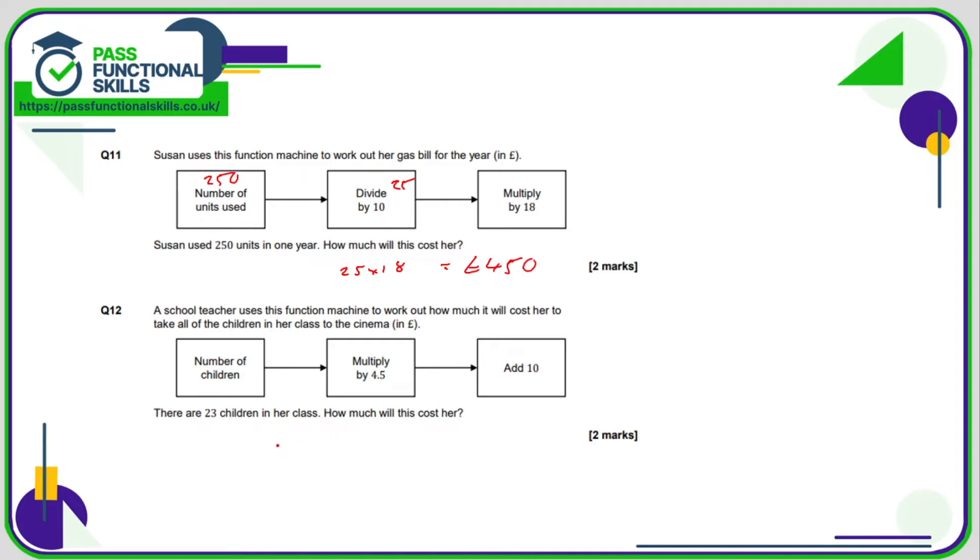Similar thing for question 12. We're going to put 23 into our function machine, and then we need to multiply 23 by 4.5, and once we've got that answer, we're then going to add 10 onto it. 23 times 4.5 is 103.5, add 10, comes out as £113.50p.